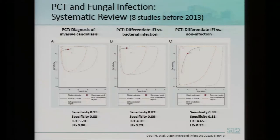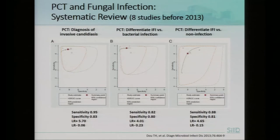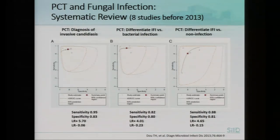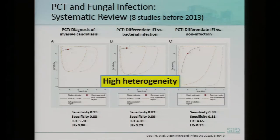That is for bacteria. Can we use it in fungal infection? This is a systematic review of eight studies performed before 2013. Procalcitonin for diagnosis of invasive candidiasis has a sensitivity of 95% and specificity of 83%. When compared with bacterial infection, procalcitonin can differentiate invasive fungal infection from bacterial infection with sensitivity and specificity of about 80%, and can differentiate invasive fungal infection from non-infection with sensitivity and specificity around 80%. However, all of these studies are not well-designed and have very high heterogeneity.